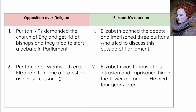Puritan Peter Wentworth urged Elizabeth to name a Protestant as her successor — that means somebody who would take over when she dies. Elizabeth was furious at this intrusion and imprisoned him in the Tower of London, where he died four years later. She acted swiftly against any opposition brought up concerning the Church.